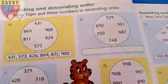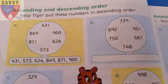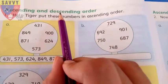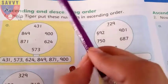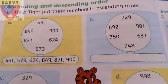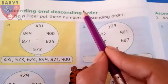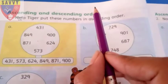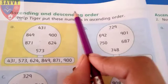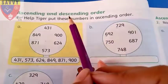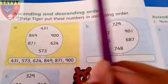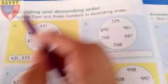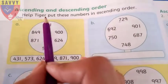And descending order is from up to down, means biggest to smallest — bade se chote ki taraf. So in ascending order we go from smallest to biggest, and in descending order from biggest to smallest.